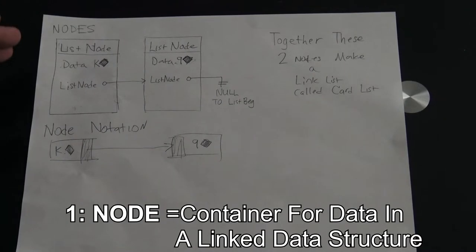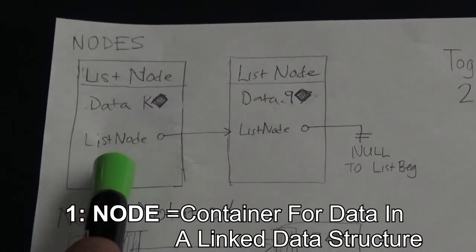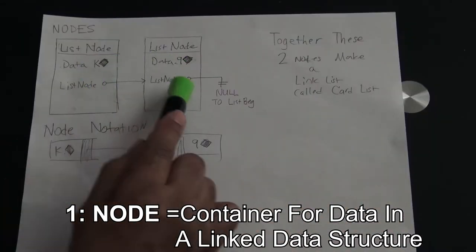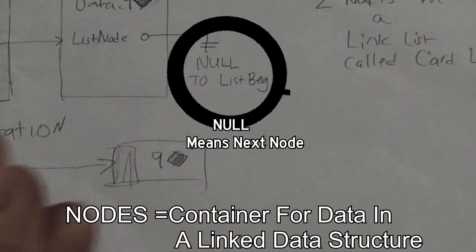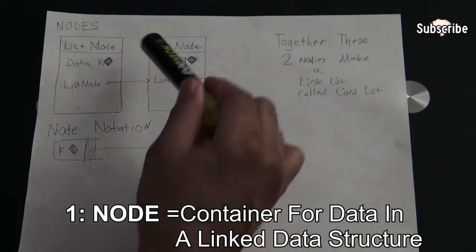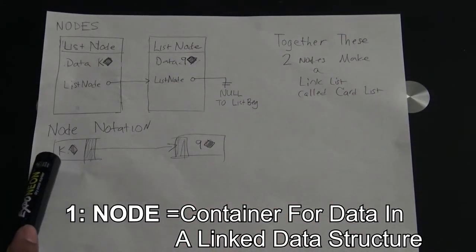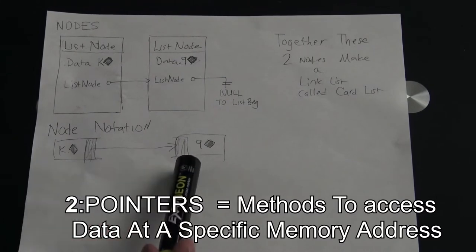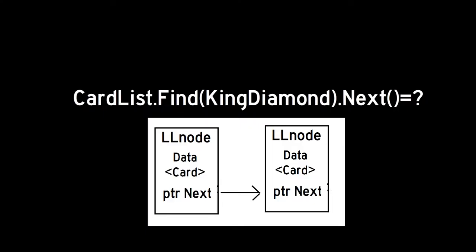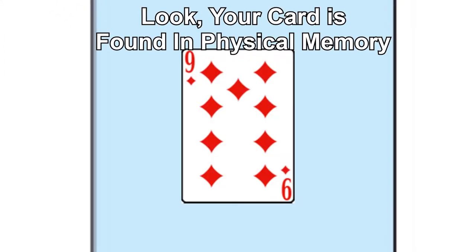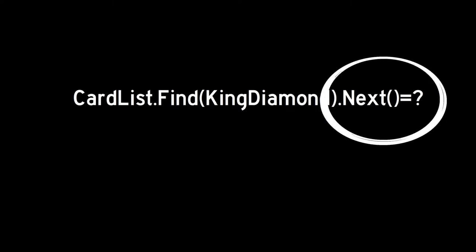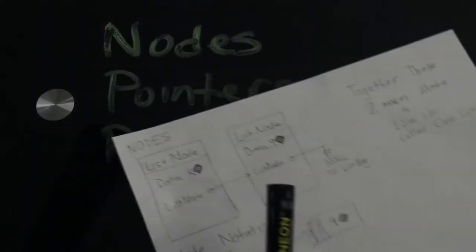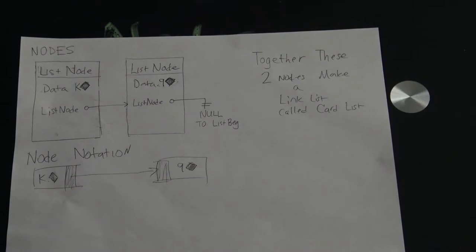Here we have two nodes that make up our linked list. Starting to the left we have the King of Diamonds and the Nine of Diamonds, and we also have a pointer to the next node. The King points to the Nine and then ends at null. Below is the standard notation we use to represent nodes - just a square with an arrow pointing to the next node. A pointer is a way of accessing specific areas in memory. We use pointers to point to the next location where the Nine of Diamonds is stored in our linked list.